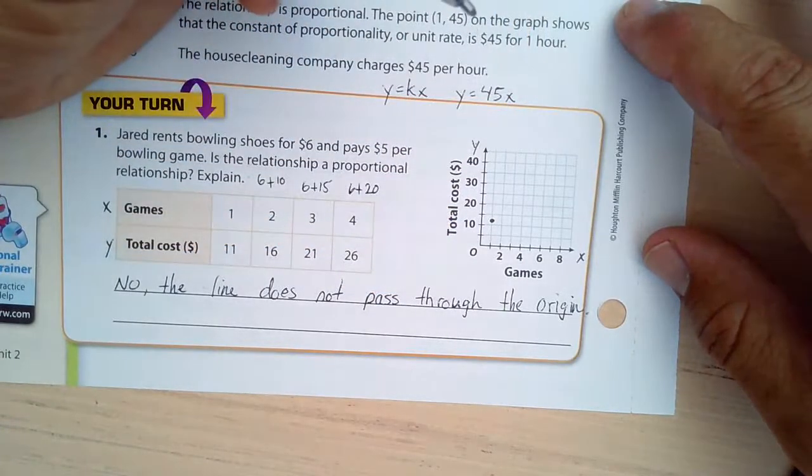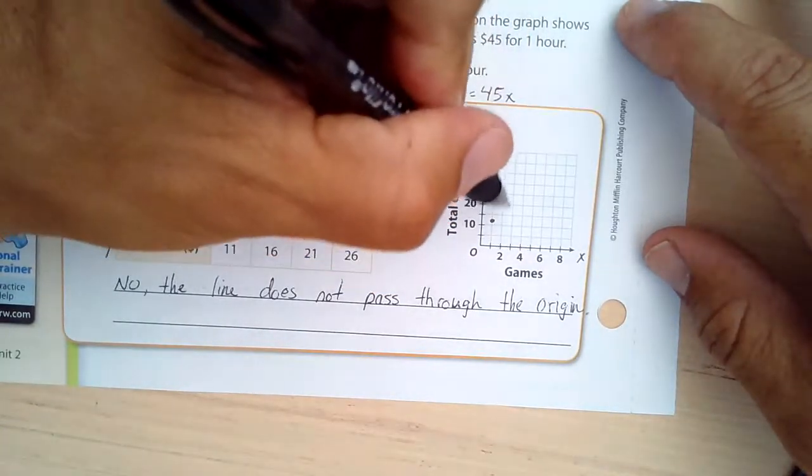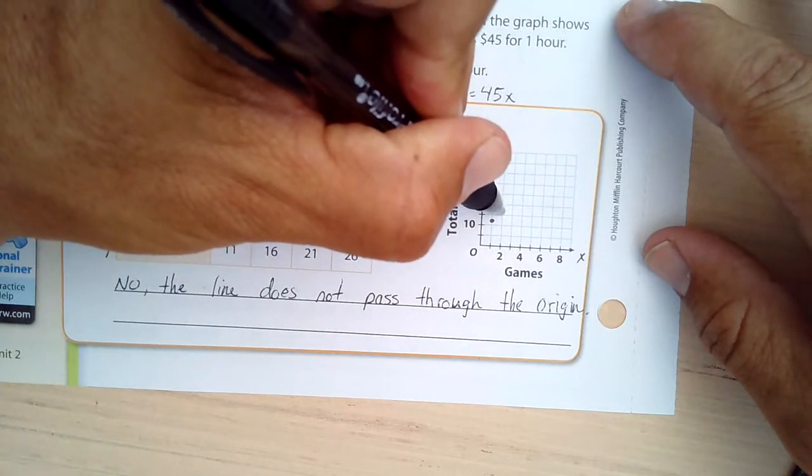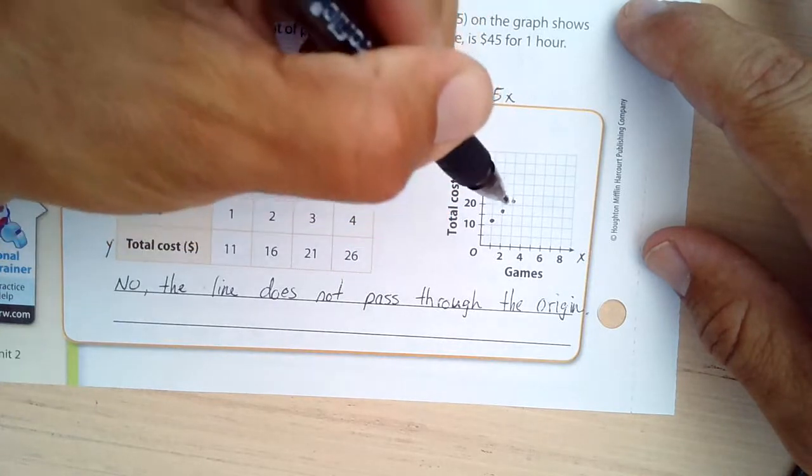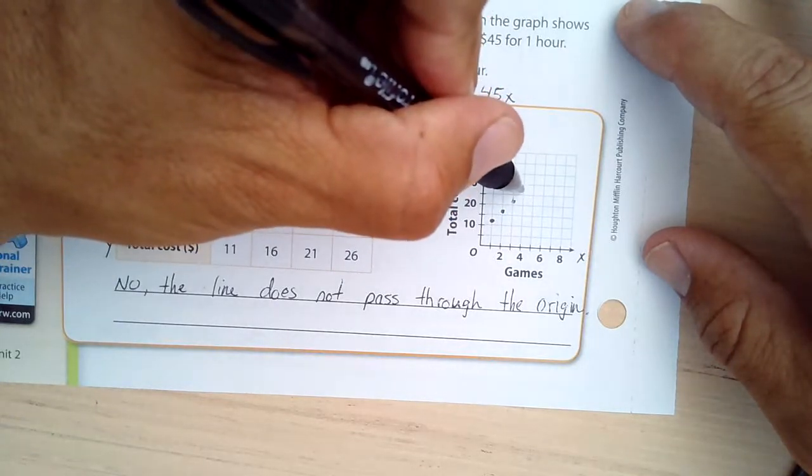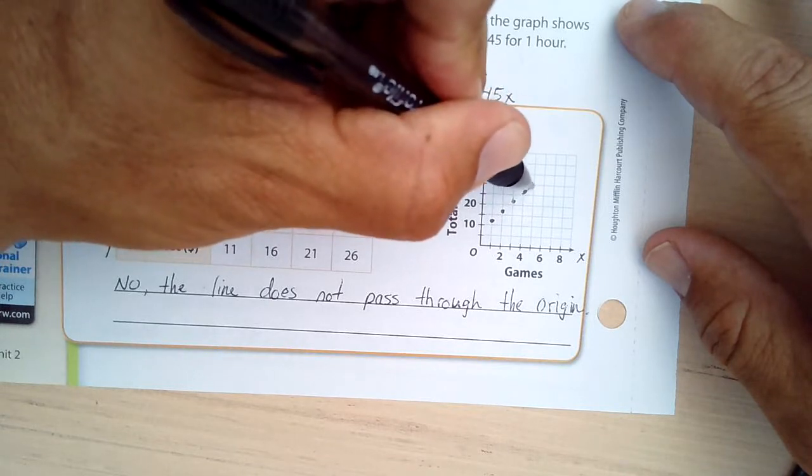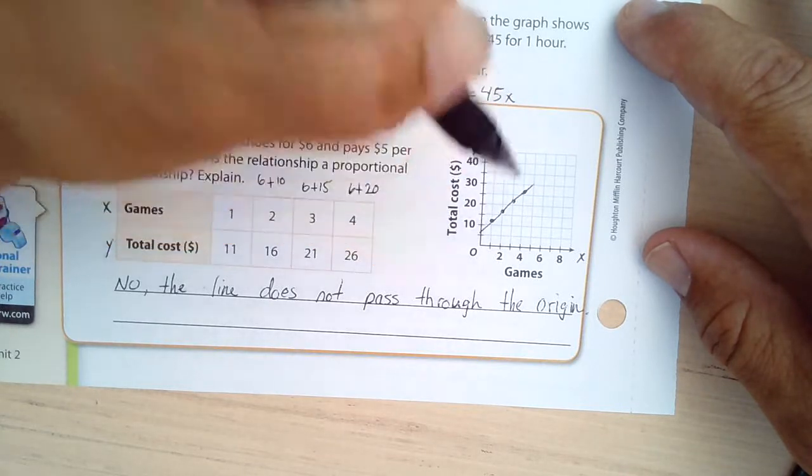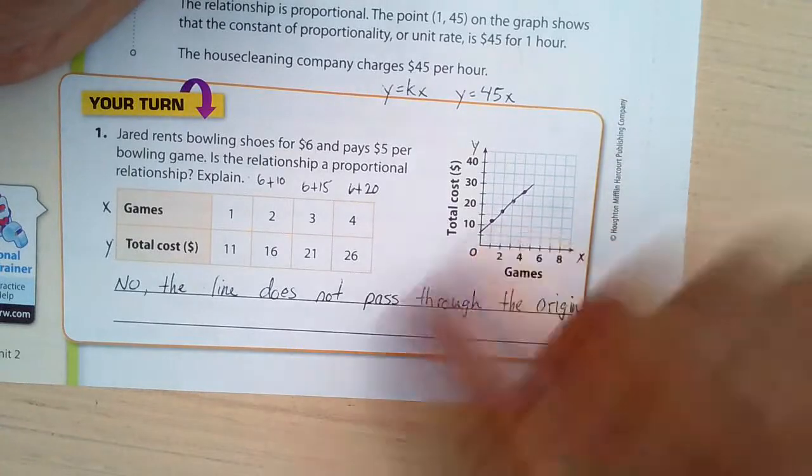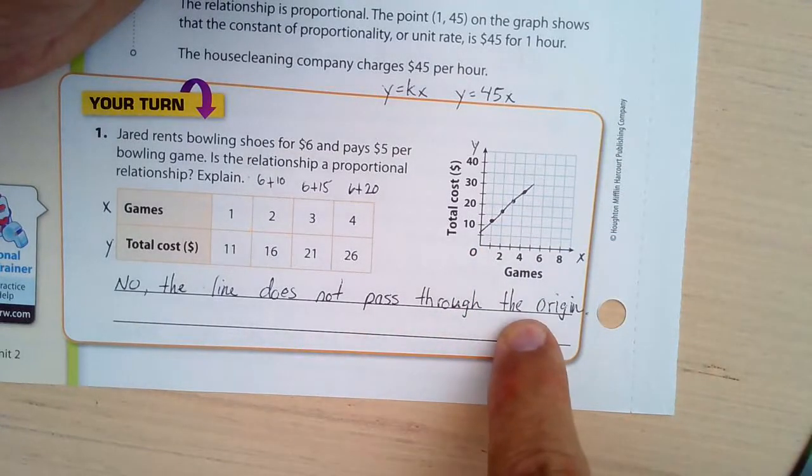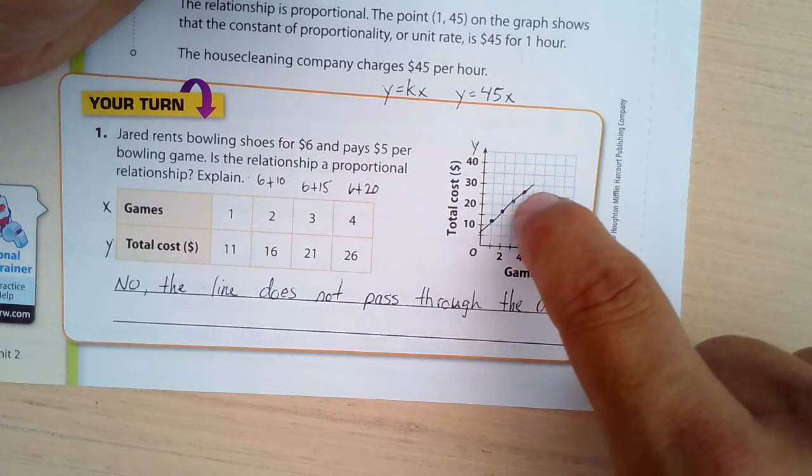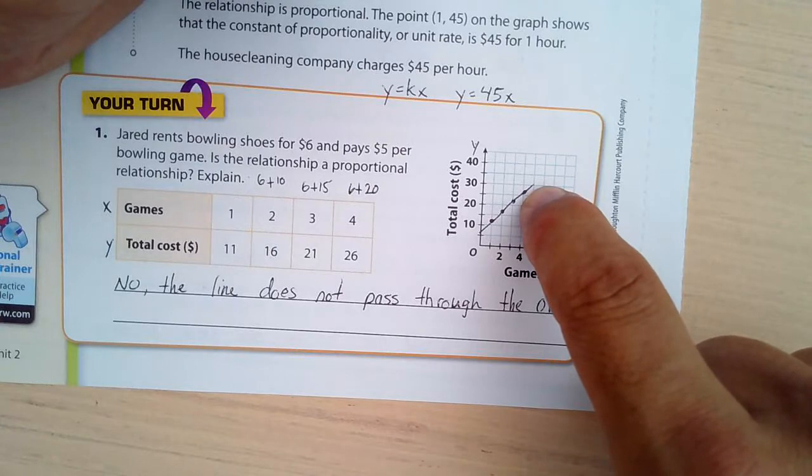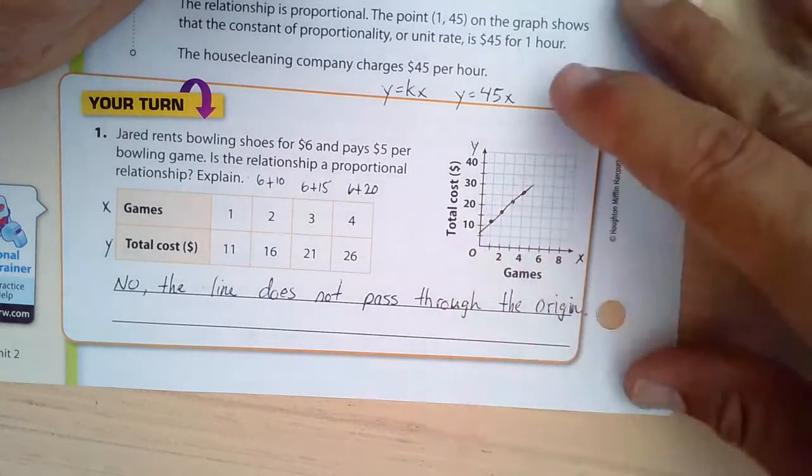Something like this. And I will draw these through. But if I extend this, it doesn't look like it's going to go through the origin. So no, the line does not pass through the origin. This is not a proportional relationship. The rate of change is the same. The rate of change is 5. But it's not proportional.